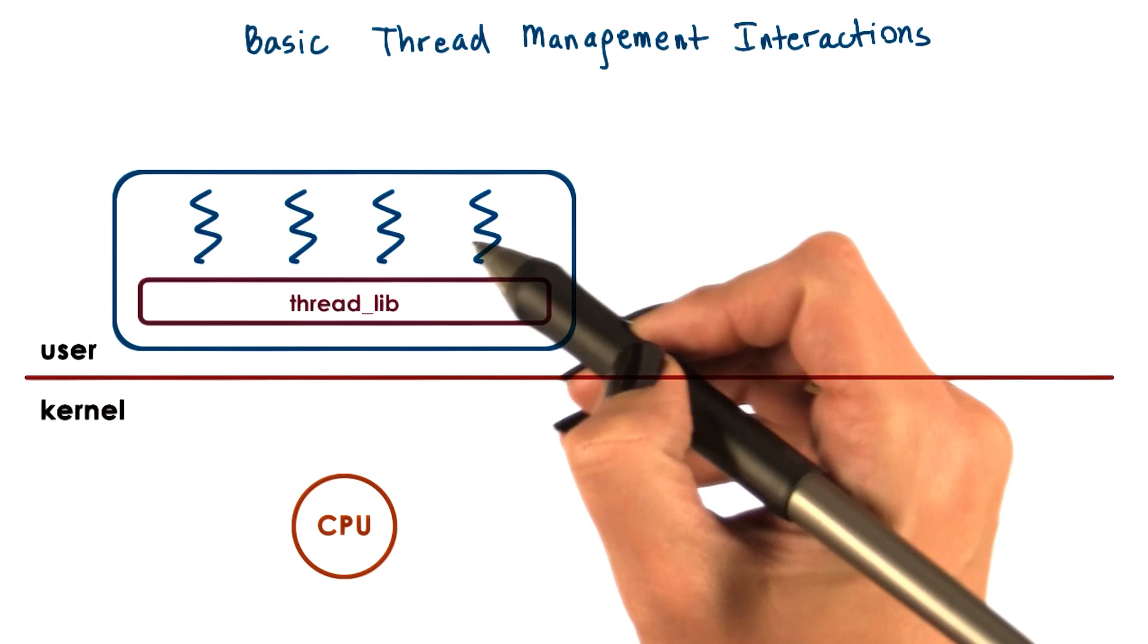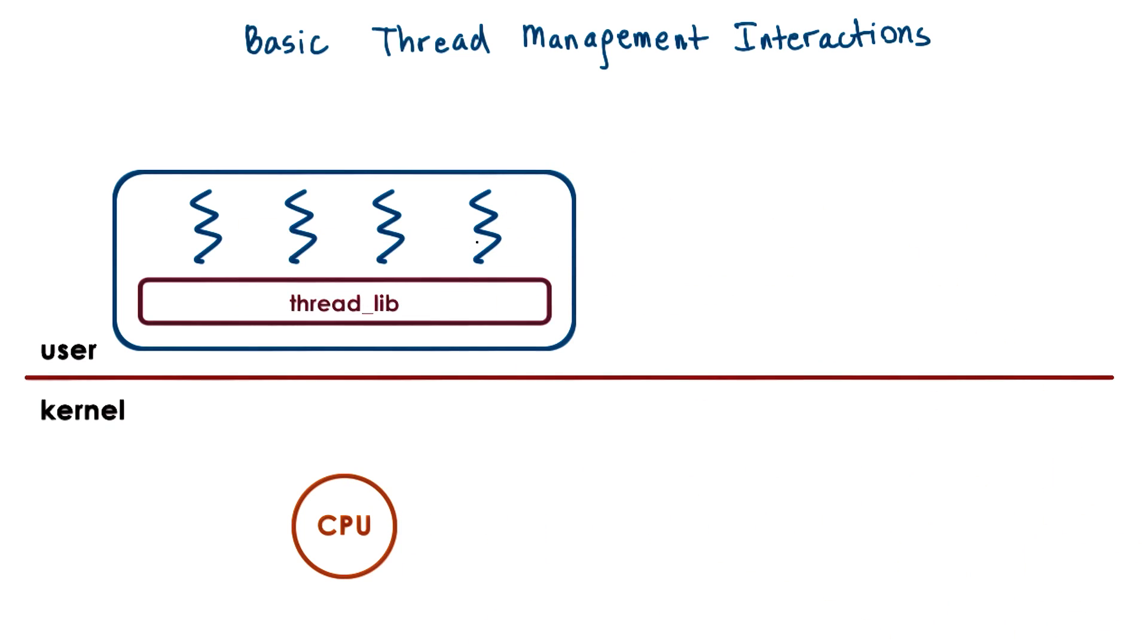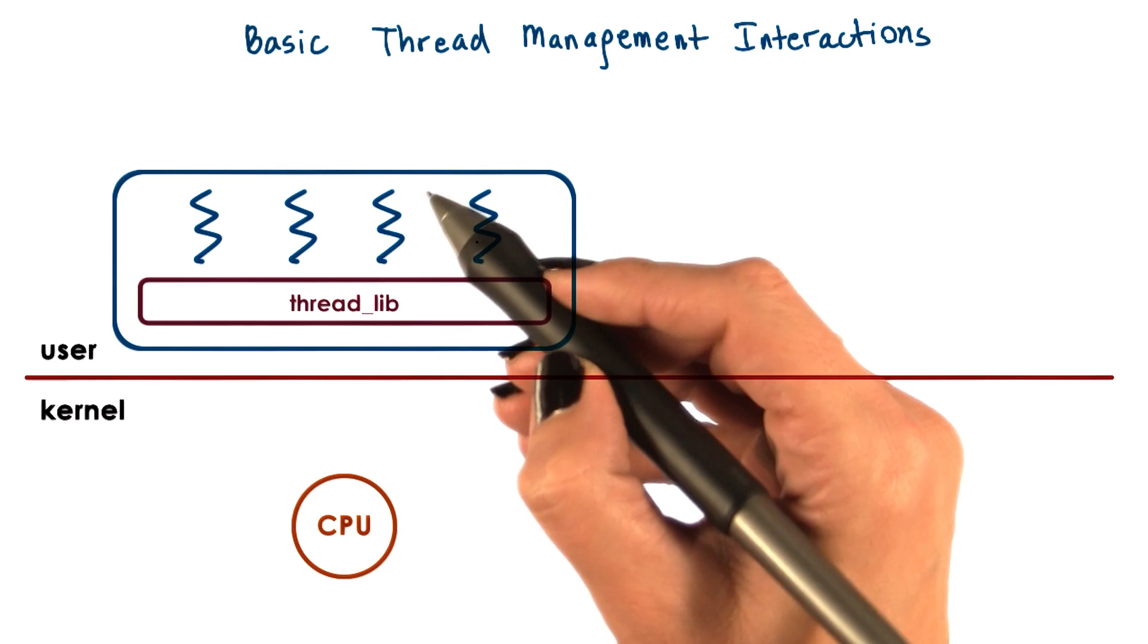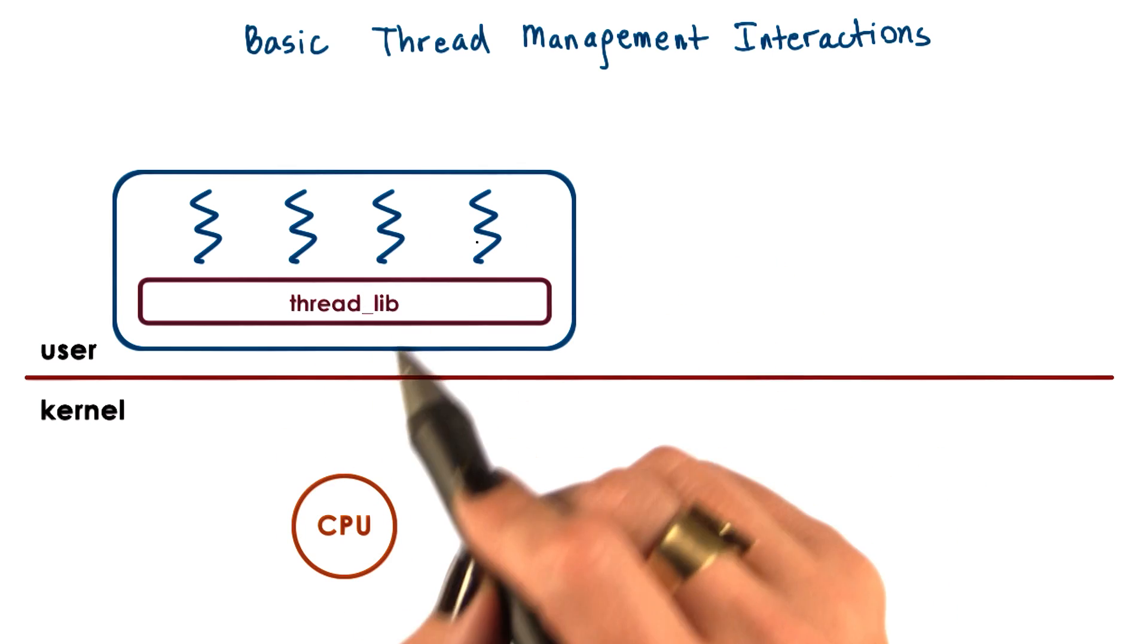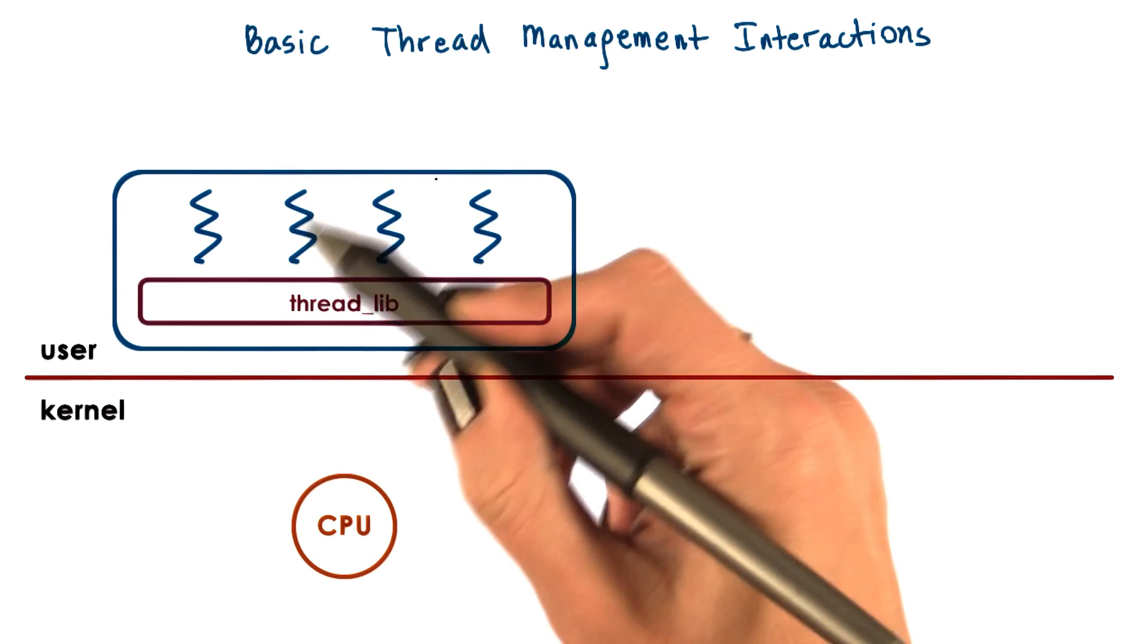Consider a multi-threaded process with four user-level threads. However, the process is such that at any given point in time, the actual level of concurrency is just two.